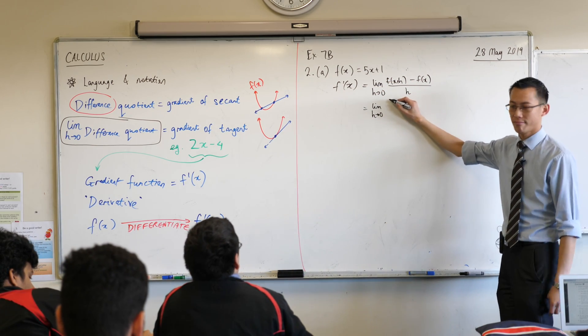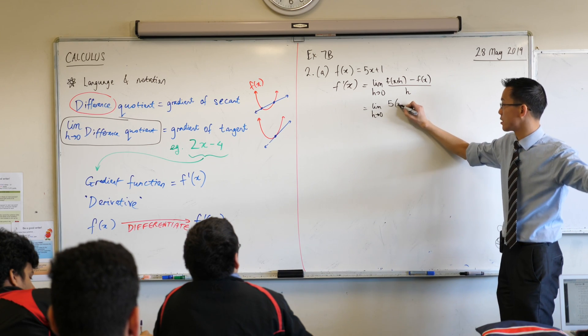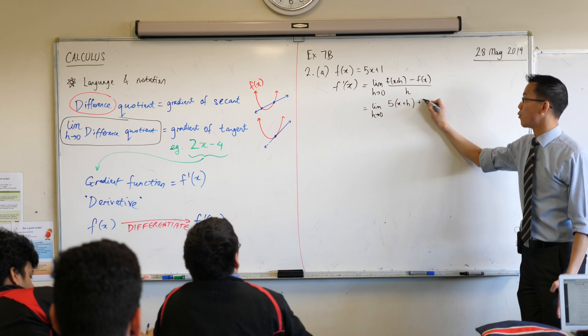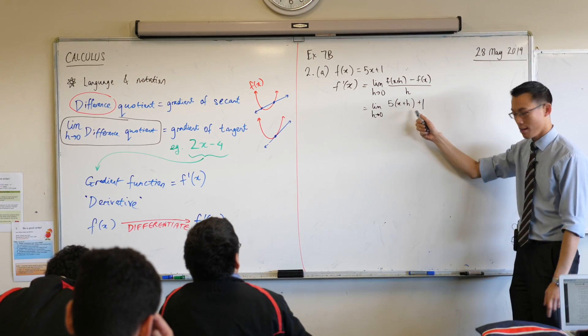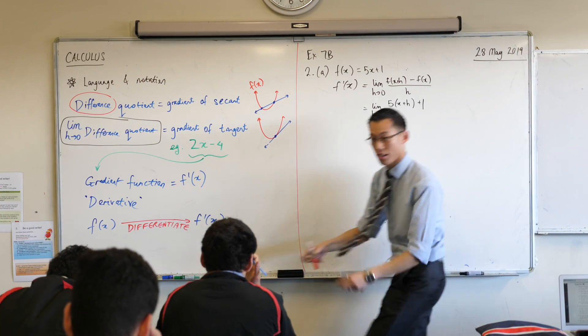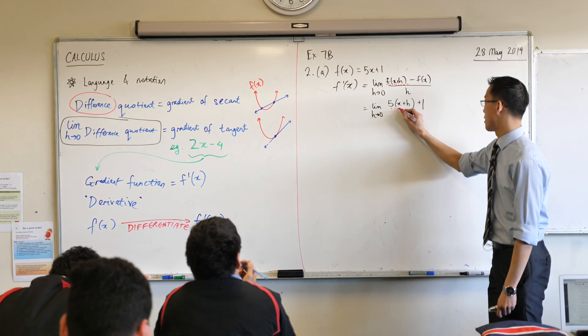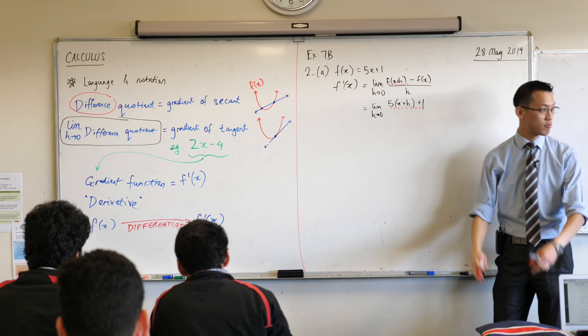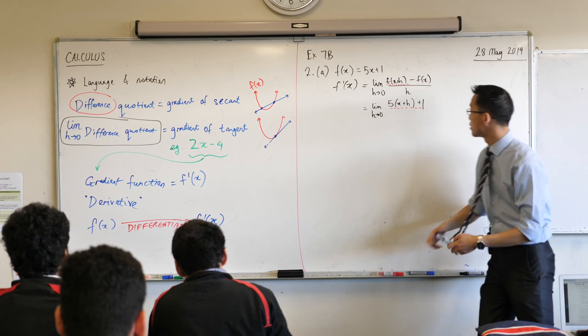5 lots of x plus h. Thank you very much, Shalina. There we go. And then I'm going to add 1. I'm just going to pause right there. So this thing here is f of x plus h. I'm just going to highlight it for you. That's the first thing I'm looking at. There it is right there. I've just changed every x and replaced it with an x plus h. So that's good.